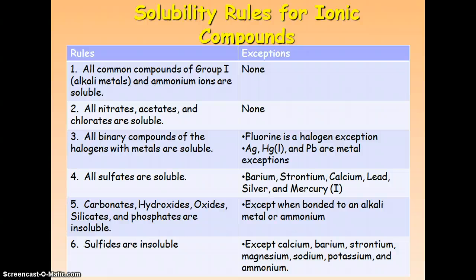Third rule: all binary compounds, meaning it doesn't contain a polyatomic ion, of the halogens - group 17 - bound with metal are soluble. One exception is fluorine is the halogen exception, so all halogens are soluble except fluorine, and then all metals that are bound with a halogen are soluble except silver, mercury 1, and lead. So if any of those are combined with like a chlorine, they're still not soluble.